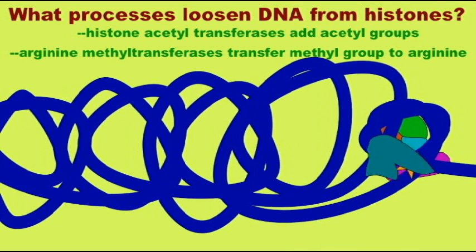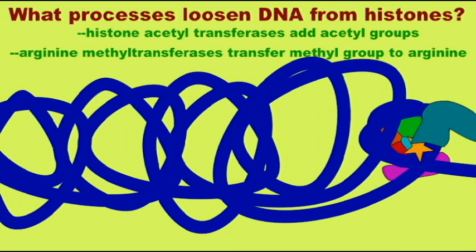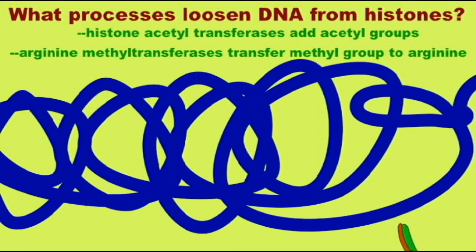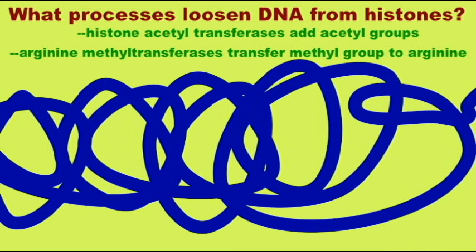Enzymes such as arginine methyltransferases, or PRMTs, attach these methyl groups to arginine to activate transcription.